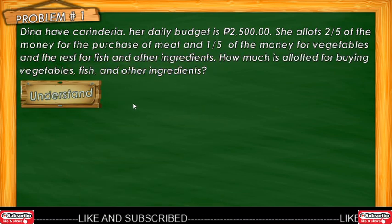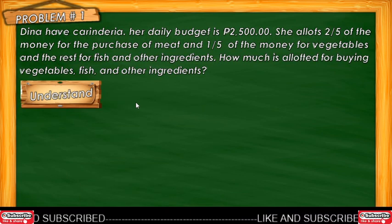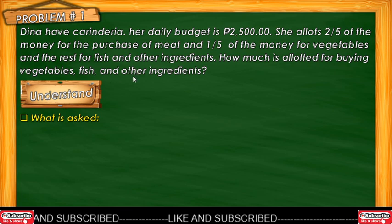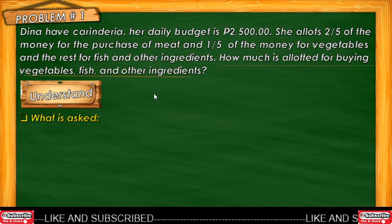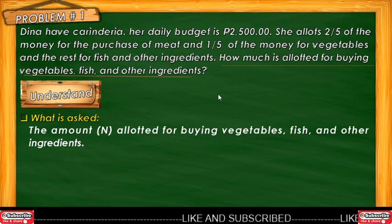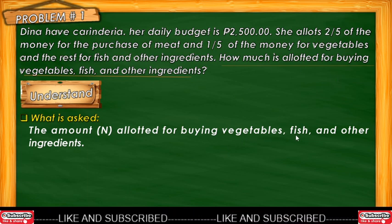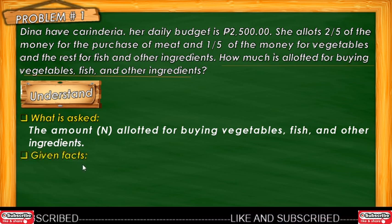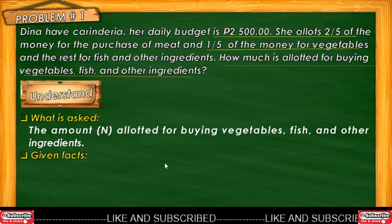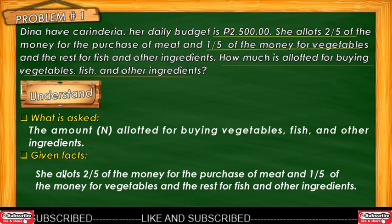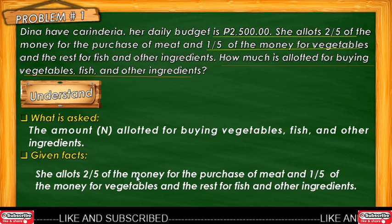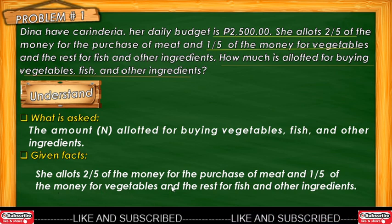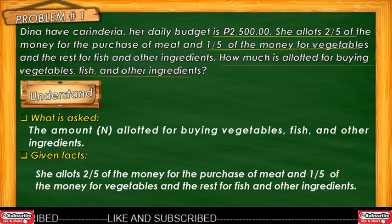Let's go back to our problem and understand and analyze it. What is asked in the problem? The amount allotted for buying vegetables, fish, and other ingredients — this is what is asked. What are the given facts? She allotted two-fifths of the money for the purchase of meat and one-fifth of the money for vegetables, and the rest for fish and other ingredients.